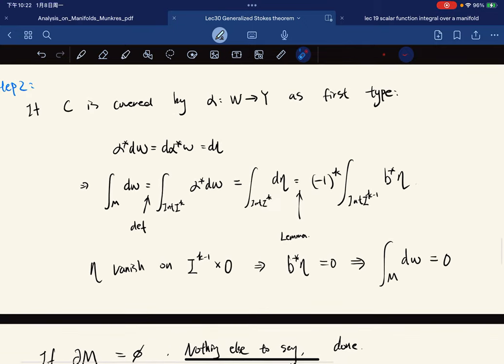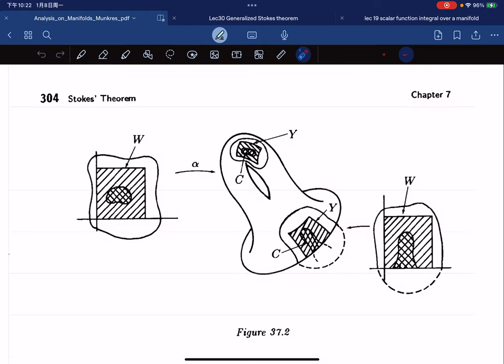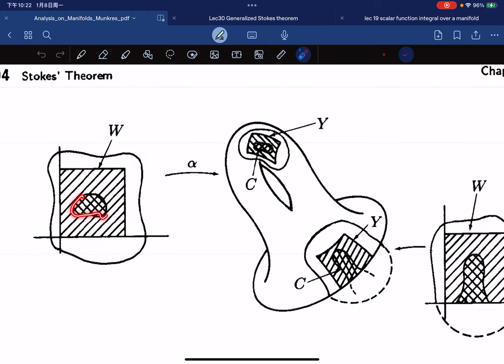And since eta vanished on this set, so here is like the support of eta. Omega takes from here and alpha star omega is like the domain is here. And remember the formula of this versus some omega. So omega of alpha(x), something like that.